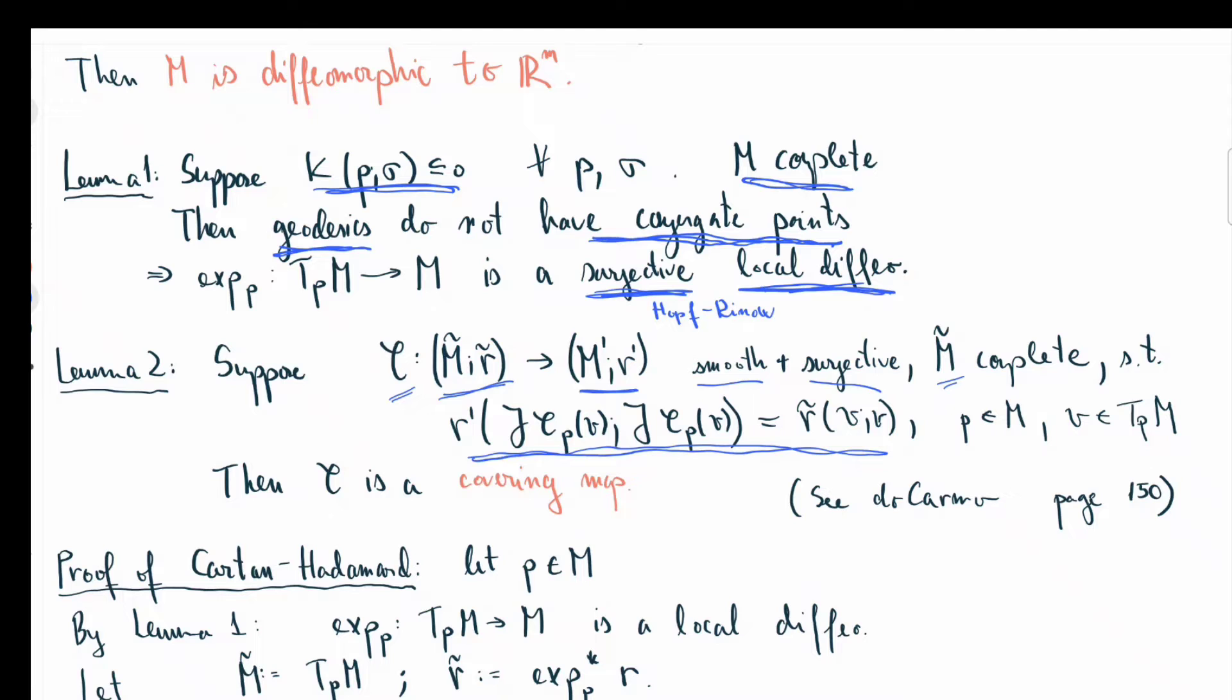So this is what local isometry means—that the Jacobian of any vector v has length the same as the vector v. If you have a local isometry, then under such circumstances, phi is always a covering map. This is a technical result, and much more general results can be shown. I'll invite you to look up the proof in your favorite reference for Riemannian geometry. One reference is, for example, do Carmo page 150.